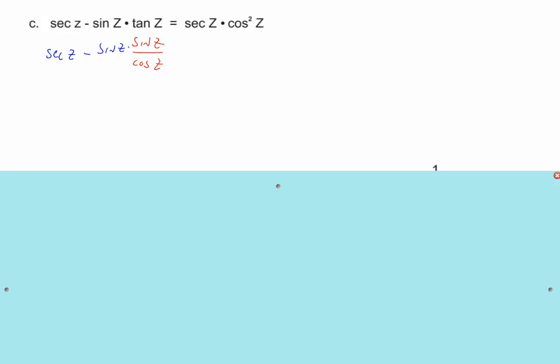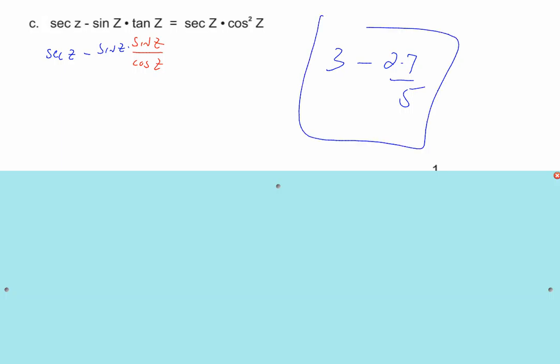You all agree that's true. Now for an analogy: if all I had was 3 minus 2 times 7 over 5, what would you do? You'd find a common denominator, add the numerators, and put them over the common denominator — getting two things to be one. That's what we're trying to do here.